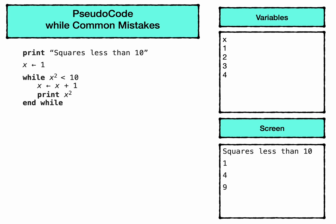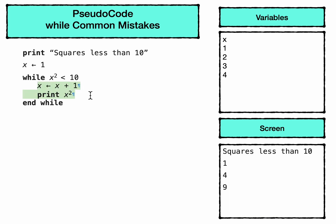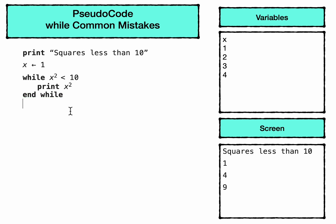Now let's look at a couple of common mistakes. In this first one, the lines inside the while and end while are reversed. What that means is when we get to the print statement, it will be printing the next value of x squared, so we would miss the value of one — it wouldn't be printed. By having the print first we're actually printing the value of x which made the condition true, rather than the next value. Another common mistake is to not have the increment line at all. If we deleted this, we now have what's called an endless loop: x will be worth one, one squared is less than ten, so it prints one, then comes back and prints one again, over and over.